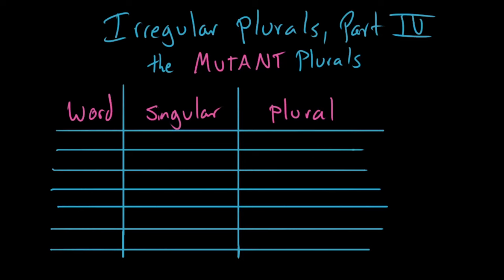Hello grammarians, welcome to irregular plurals part four, the mutant plurals. Yes friends, these words have mutant superpowers, in that they can transform weirdly and obnoxiously, not obeying any other rules of English pluralization. But here's the cool thing, there are only seven words that behave this way.